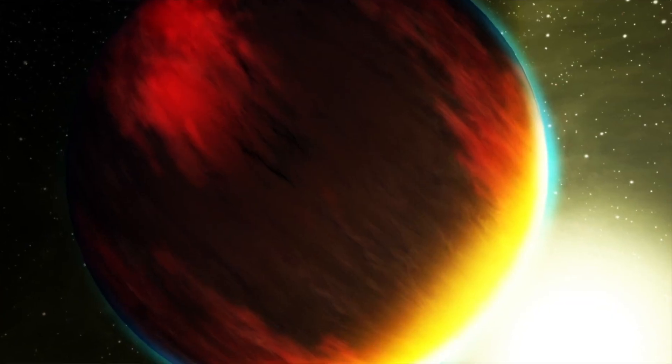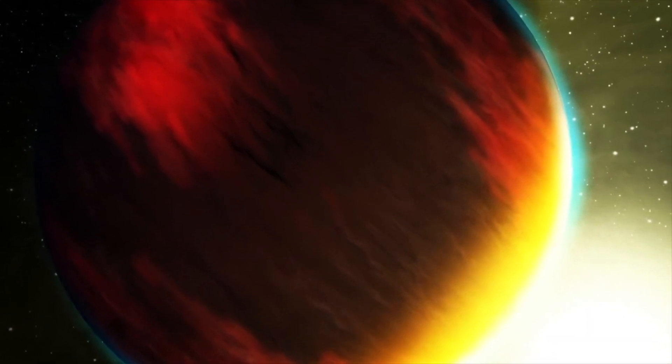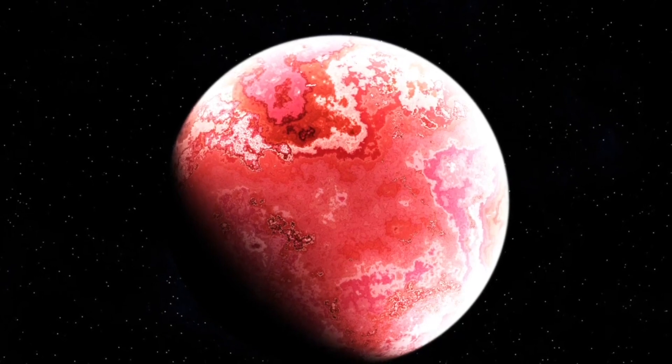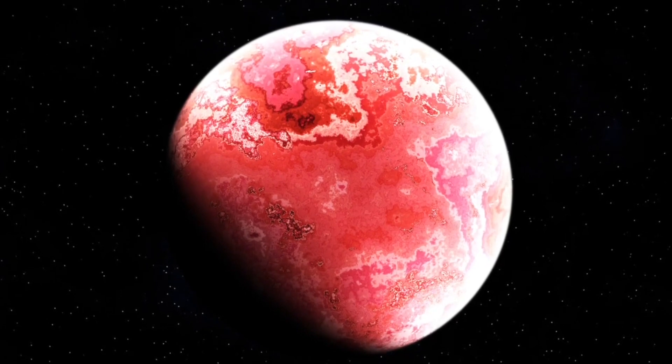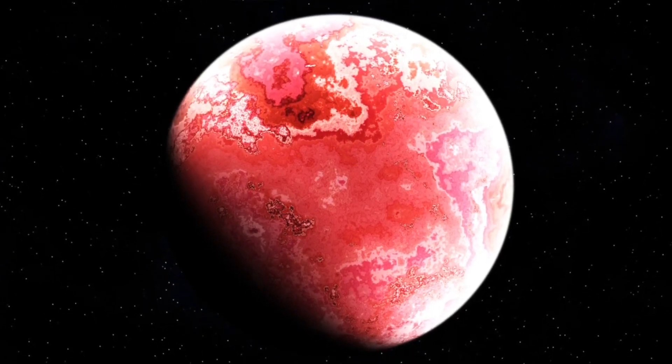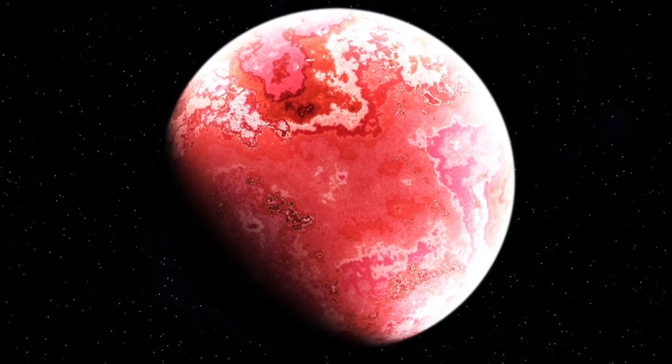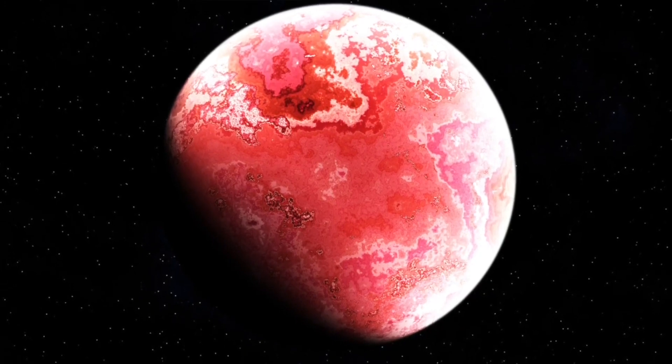Accordingly, the exoplanet is of a kind known as an ultra-hot Jupiter. But while it's the hottest, it's also one of the darkest known worlds. About as dark as charcoal, absorbing over 97% of visible light that shines onto it.